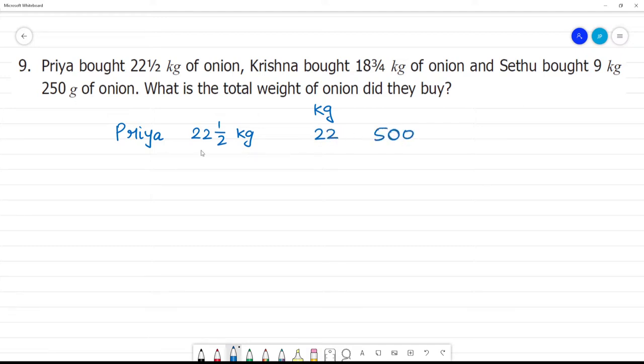Half kg equals 500 grams. Now Krishna. Krishna bought 18 and 3/4 kg. So 18 and 3/4 kg means 18 kg and 750 grams, because 3/4 kg equals 750 grams.